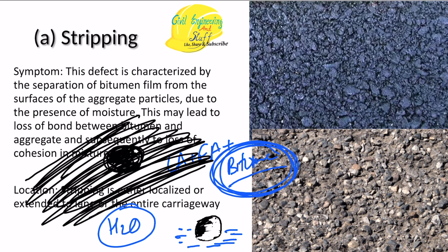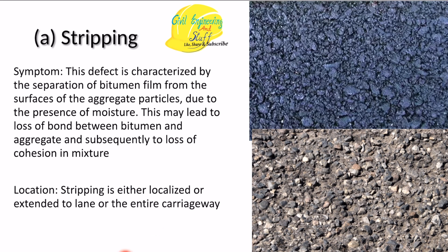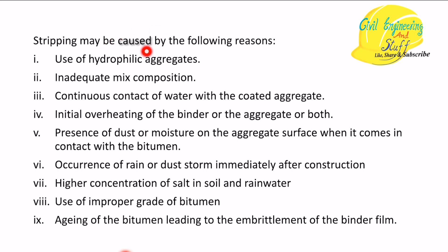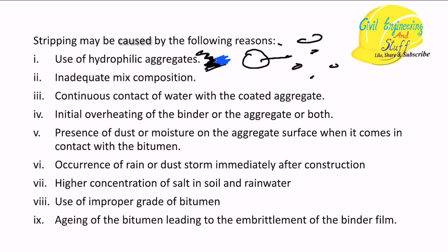The first reason for stripping is hydrophilic aggregate - aggregate that absorbs moisture and attracts water molecules toward it. If we have too much hydrophilic aggregate, it will attract water molecules. The aggregate is coated with bitumen, but as moisture is introduced, the bitumen will strip off from the aggregate surface, leaving only aggregate. Due to the lack of binding, the aggregate particles will come out from the overall mix as the vehicle exerts pressure, creating areas coming out of the pavement surface.